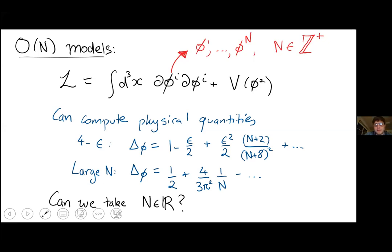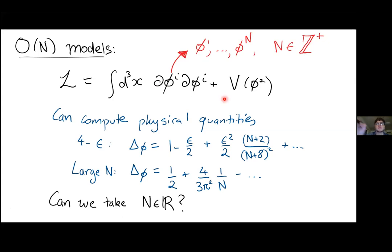Let's start with some motivation. A very common starting model to study QFTs is the O(N) model. We have N scalar fields φ₁, φ₂, φ₃, and so on, coupled together using a Lagrangian that preserves O(N) symmetry — if we rotate any of the φ fields into one another, the Lagrangian remains invariant. We can then study various physical quantities, like the critical dimension of the φ field.